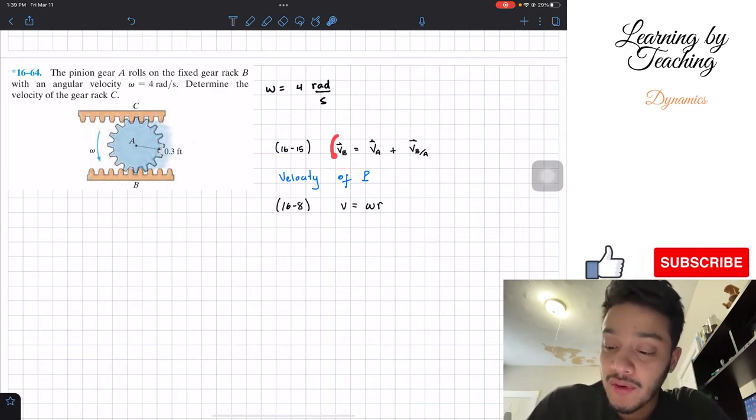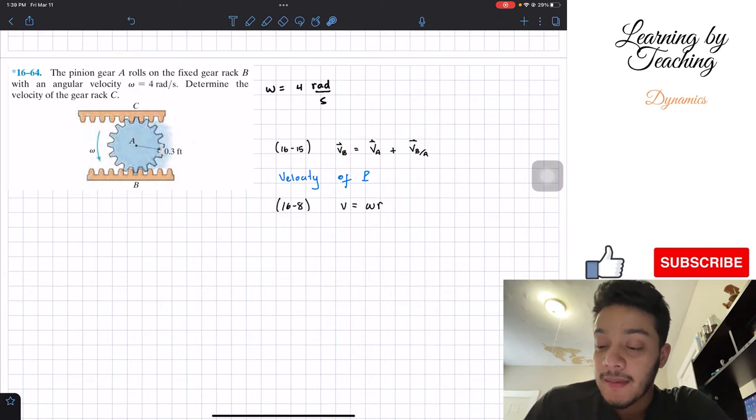We have that the velocity of a point B is going to be equal to the velocity of another point called A, plus the relative velocity of B with respect to A. That's why it's called relative motion.